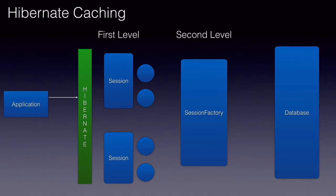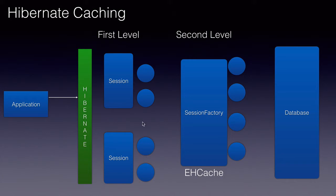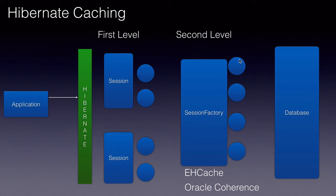The second level cache works at the session factory level. Hibernate allows us to configure different cache providers at this level. EHCache is the default cache provider. I have also used Oracle Coherence cache, which is a little more advanced second level cache. Once the objects are cached at the session factory level, they are available for the entire application, not just the session, which will improve the performance of our application further.